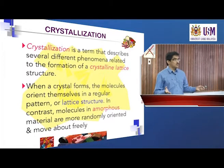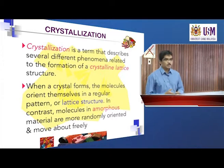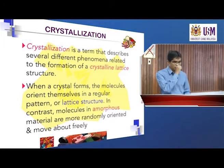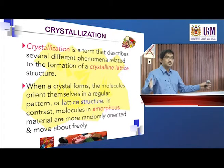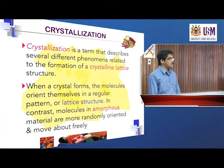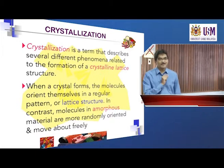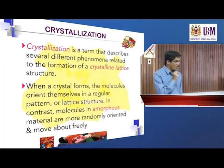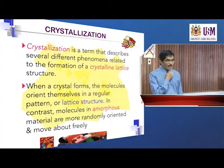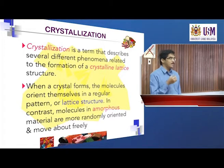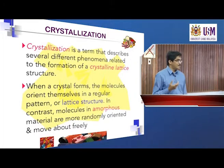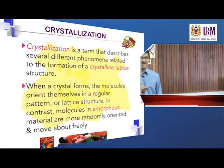If we cool down slowly, we allow sufficient time for the molecules to arrange themselves into the proper ordered arrangement — we get a crystal. But if we cool too fast, like adding liquid nitrogen, the molecules don't have time to arrange themselves and we get amorphous material instead. The analogy: if I ask everyone to leave the room and come back to their original seat in five minutes, you can do it — that's slow cooling, and you get a crystal.